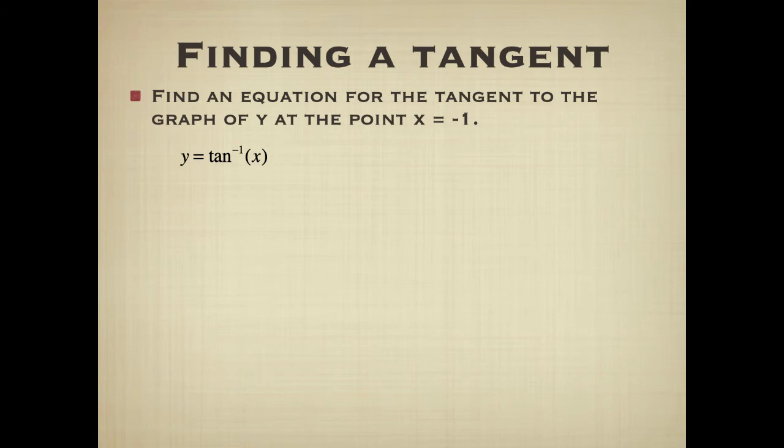Now it says find an equation for the tangent to the graph of y at the point x equals negative 1. The first thing we should do is we need to have a point. We also need to have a slope. So let's look for our point first, and then we'll do our derivative to find our slope.